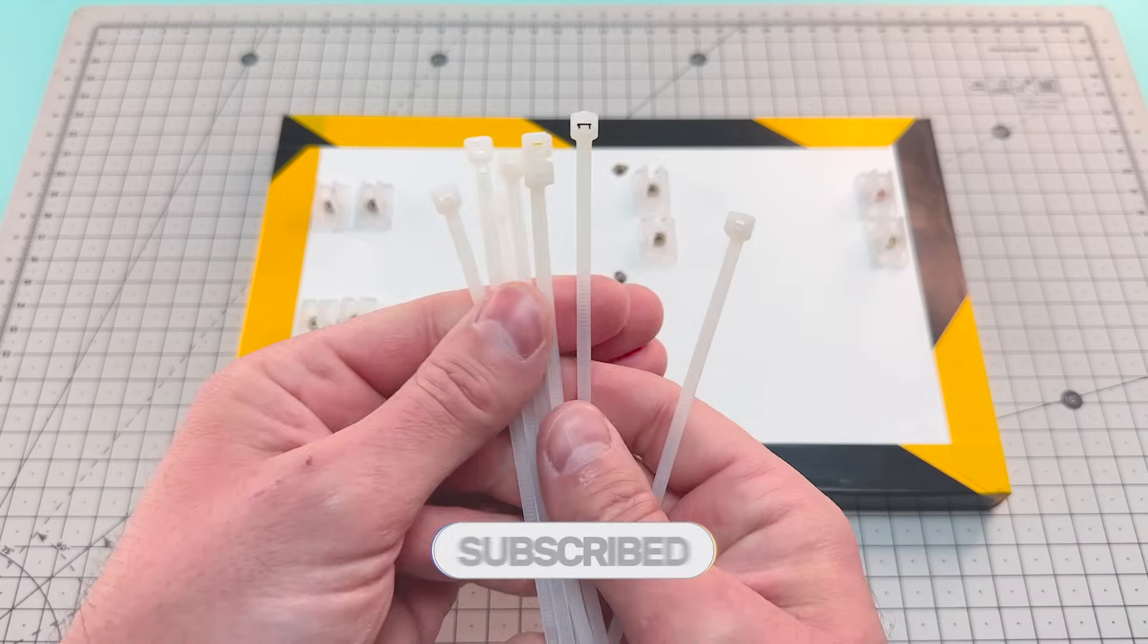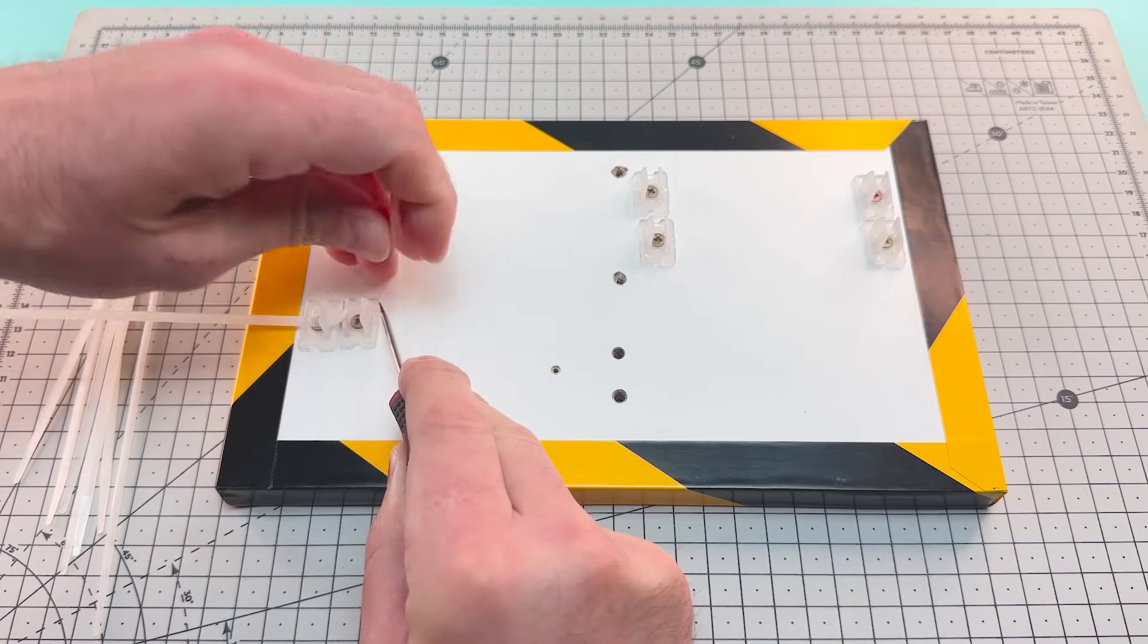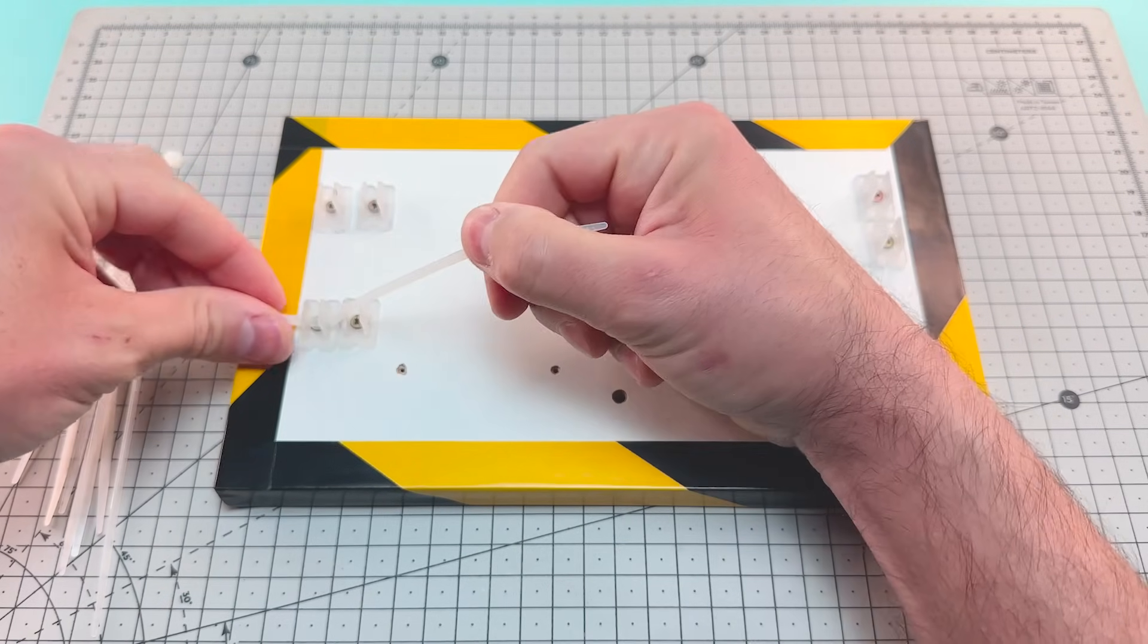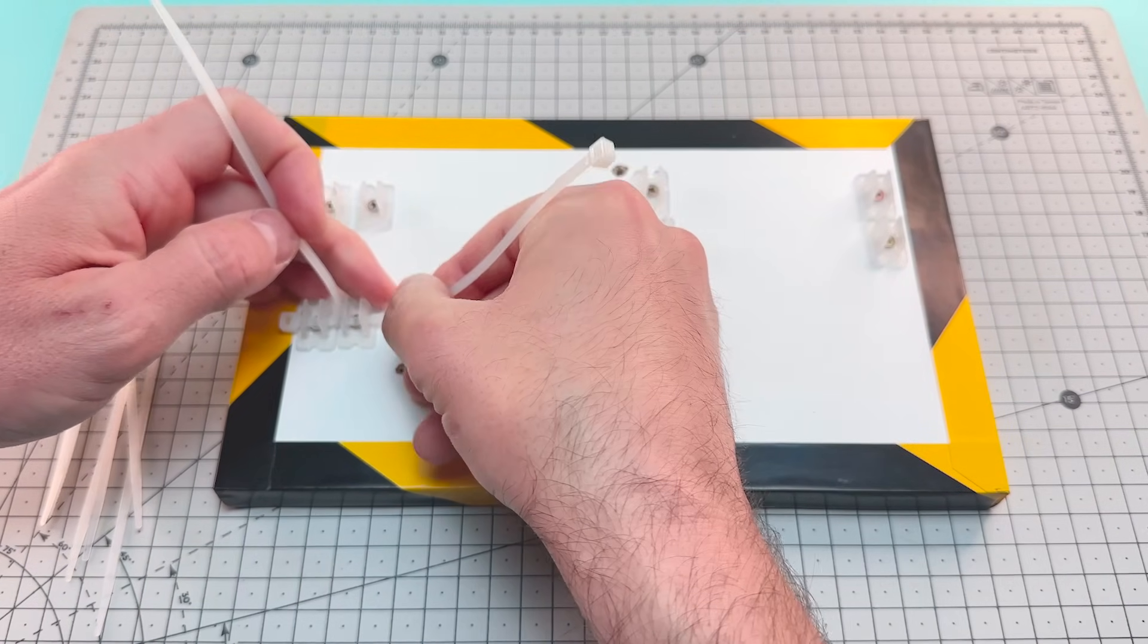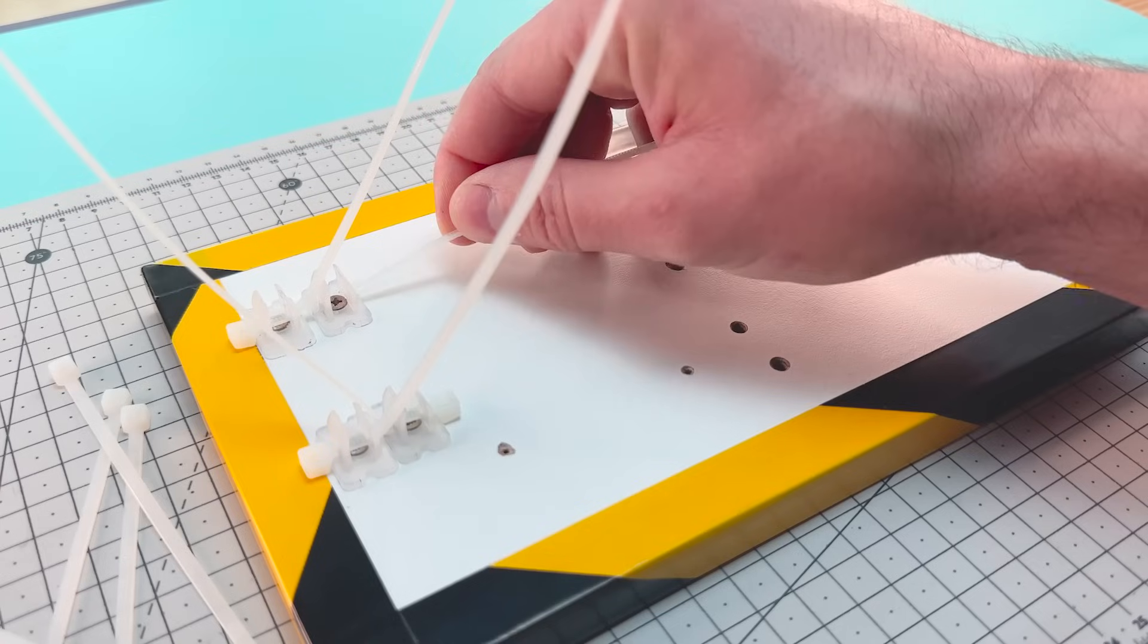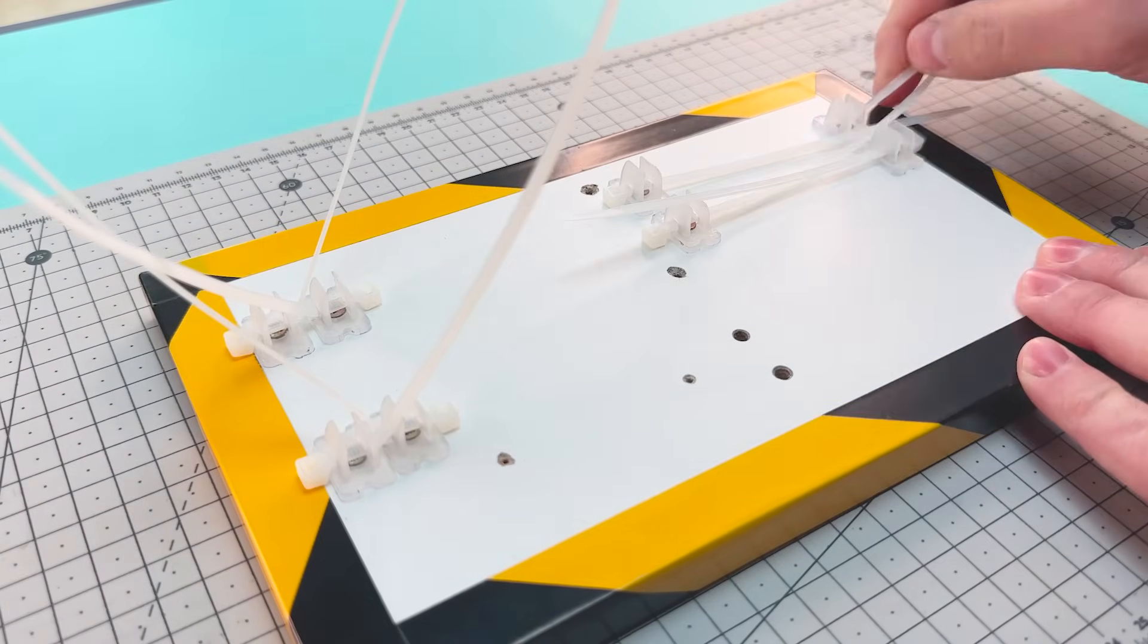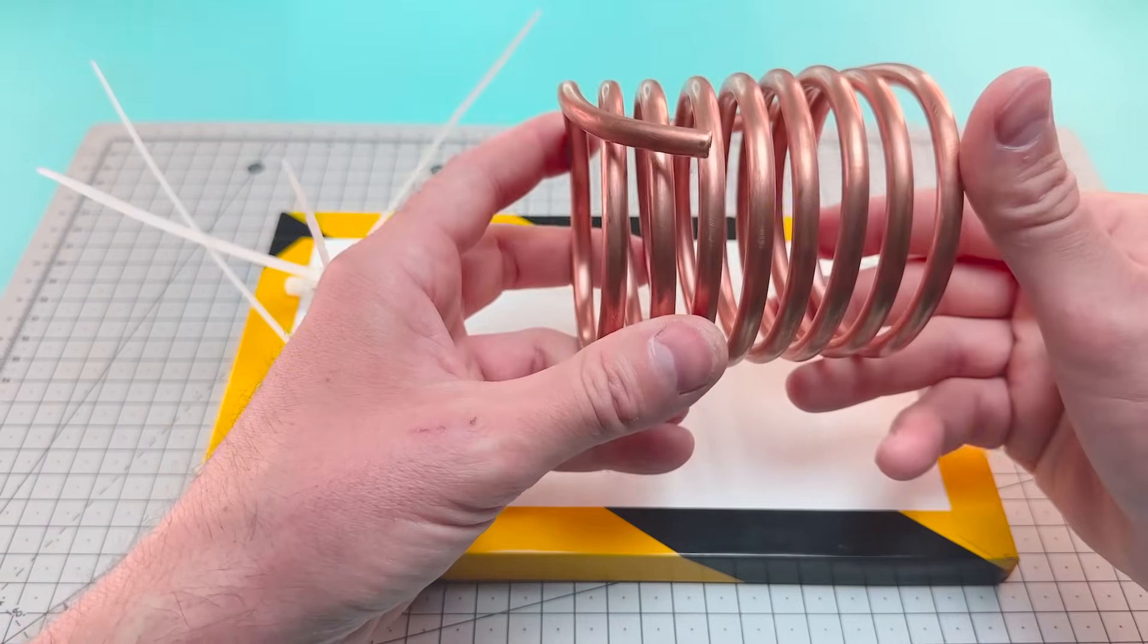First we'll secure the evaporator tube. A few zip ties will be enough to fasten our conduit. We insert the zip ties through the supports to hold the tubes, and then we'll secure the evaporator.